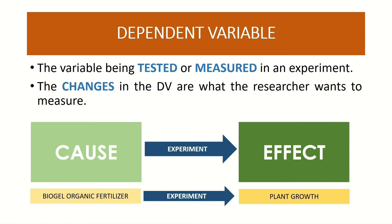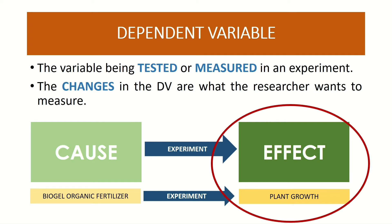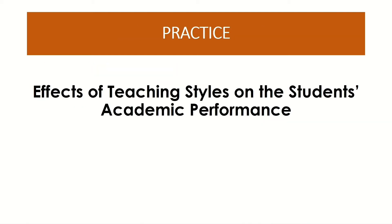The variable that you want to see changes, effects, or results in is called the dependent variable. Remember that this variable is the one being tested or measured in an experiment. The relationship between the independent and dependent variable is cause and effect — the independent variable causes, and you want to see the effect on the dependent variable. So in our example, the independent variable was the biogel organic fertilizer, and we wanted to see its effect on plant growth, which makes plant growth our dependent variable.